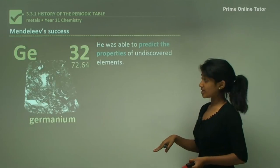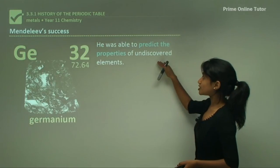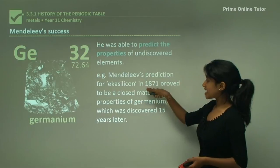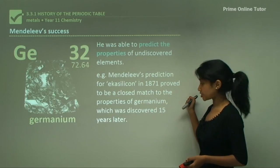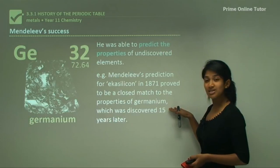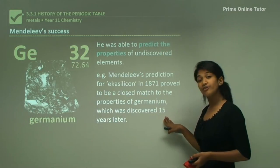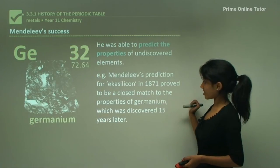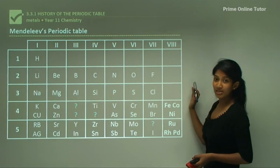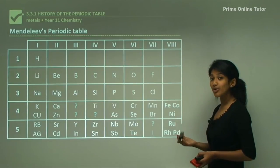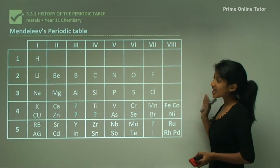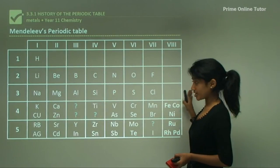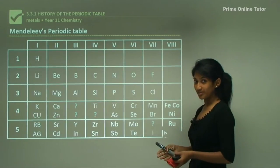Any element surrounding a gap made a contribution to predicting the undiscovered elements. For example, he predicted eka-silicon in 1871, which proved to be a close match to the properties of germanium. Germanium was discovered 15 years later after his proposal. As you can see, this was Mendeleev's periodic table — as opposed to Newlands' periodic table, this is much more complex and much more similar to our modern periodic table, without the block in the middle which is our transition metals.